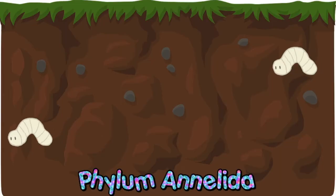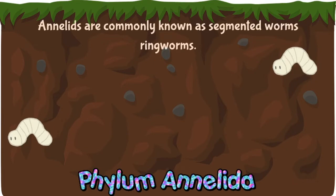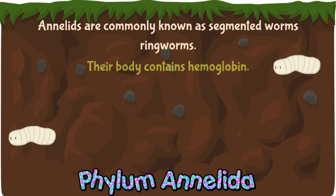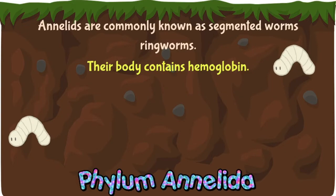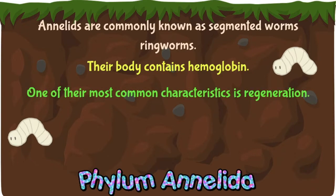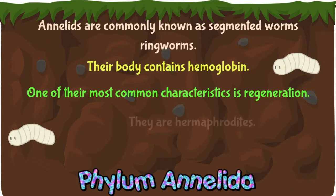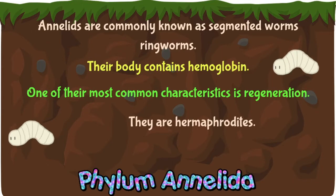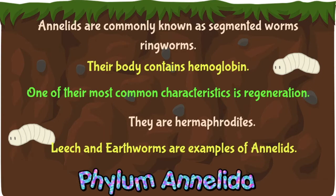Now I'll introduce you to phylum Annelida. Annelids are commonly known as segmented worms or ringed worms. Their body contains hemoglobin which gives them a red color. Regeneration is a very common characteristic of the annelids. Annelids can either have distinct male or female forms or be hermaphrodites. Leeches and earthworms are some examples of Annelida.